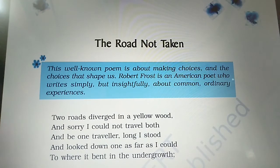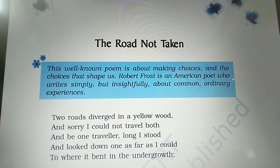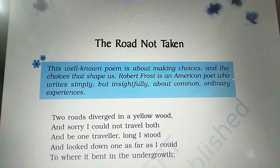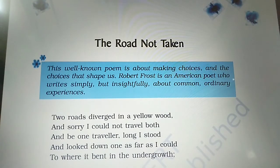Let's begin this poem. 'Two roads diverged in a yellow wood.' Now we have two roads diverged — diverged means separate, they were separate. They were in a yellow wood. Wood means forest. Yellow means that it is a forest full of leaves that have turned yellow, meaning there are many trees whose color has now become yellow.